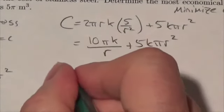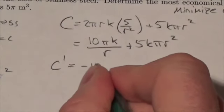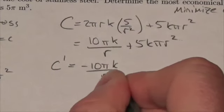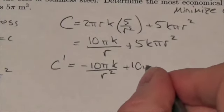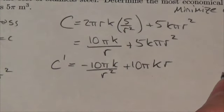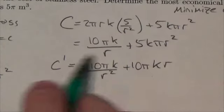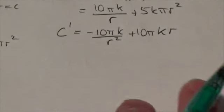And now what we'll do is we'll take the derivative with respect to the radius. And so this is going to get us negative 10πk over r² plus 10πkr. So there's the derivative of cost with respect to the radius.